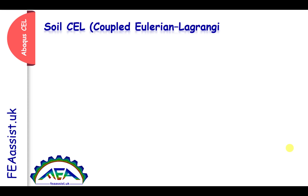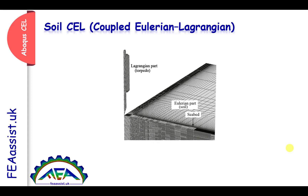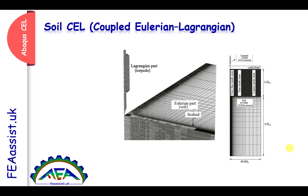CEL couples Eulerian-Lagrangian methods. We have a deformable Eulerian part, which is soil, and we have an applied load part, which is Lagrangian — it can be rigid or elastic parts. In the CEL method, we must use different mesh strategies. If we use very fine mesh in all regions, the simulation time will be very, very long. And if we use coarse mesh in all regions, we will have results with less accuracy. So, using a combination of mesh strategies can help to run fast simulations with acceptable accuracy.